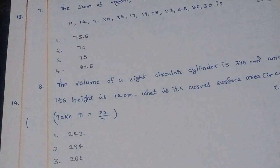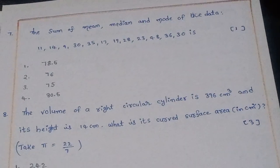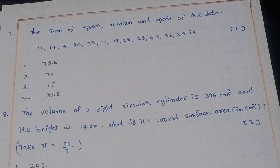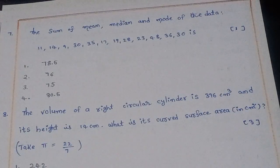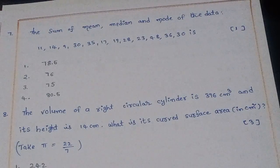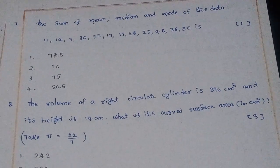Seventh question: The sum of mean, median, and mode of a given data set. The right answer is 78.5, and option 1 is correct.